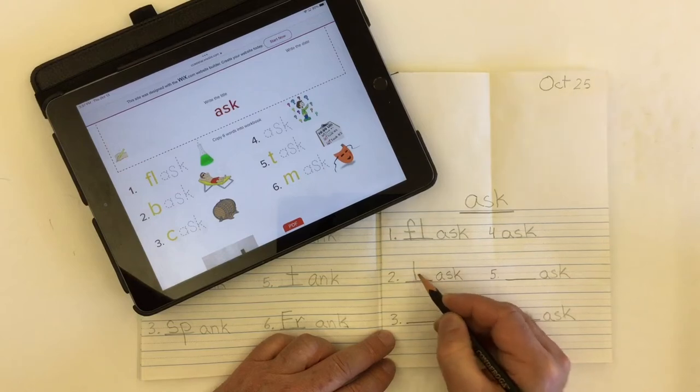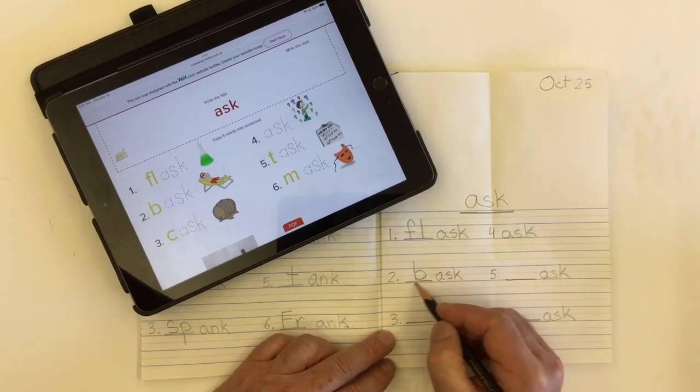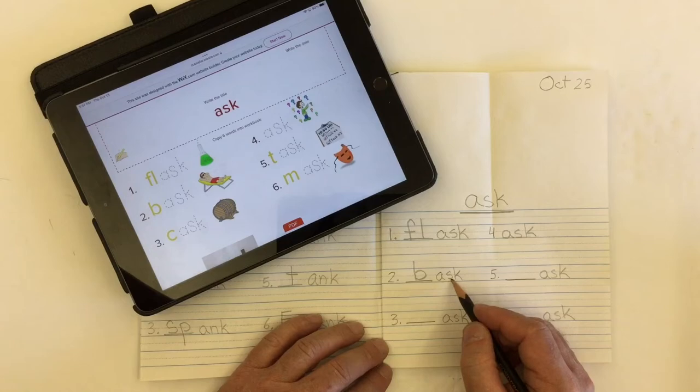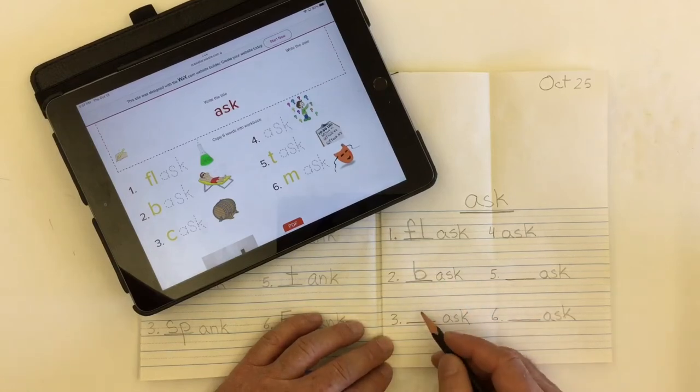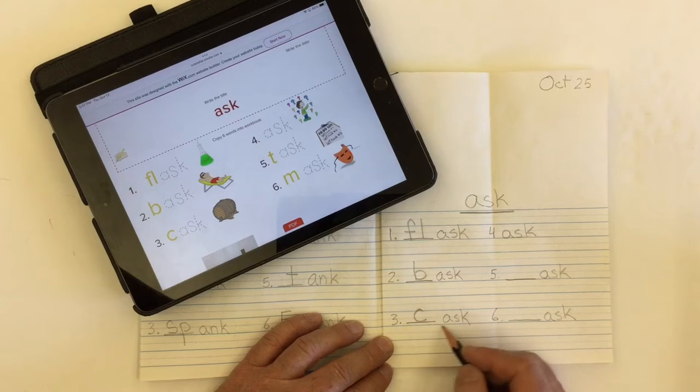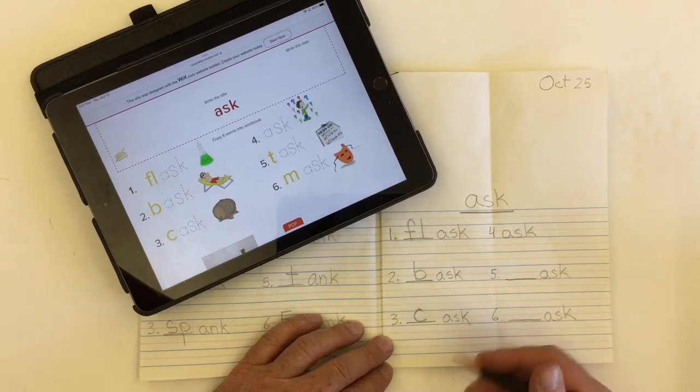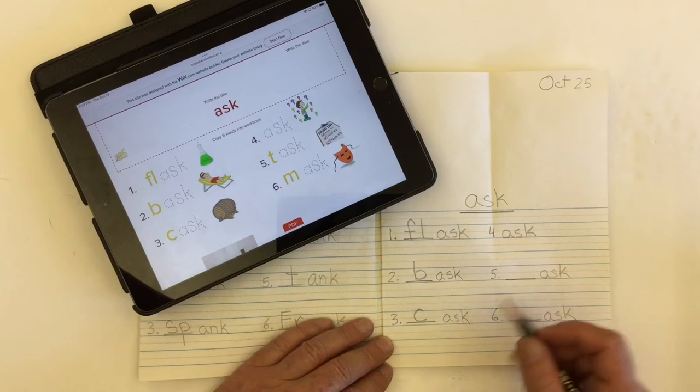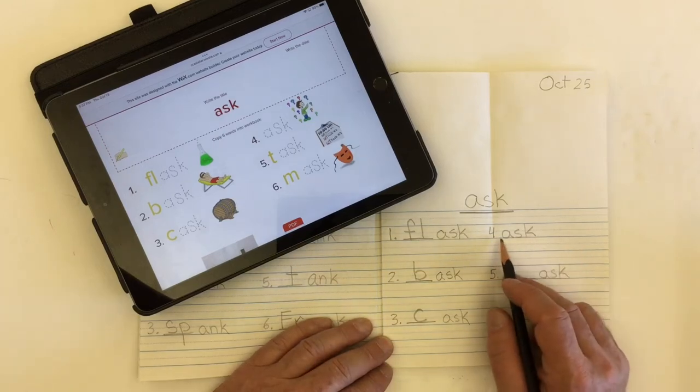For number two, I need a B. Bask, to lie in the sun, to bask in the sun. Number three, I need a C, a hard C. Cask, a cask is a wooden barrel, a wooden container. Number four, I don't need to put any mystery letters in front. Ask is a word on its own, like ask a question.